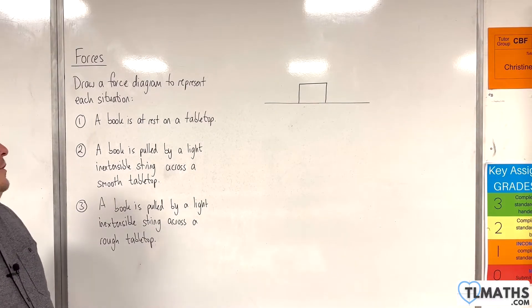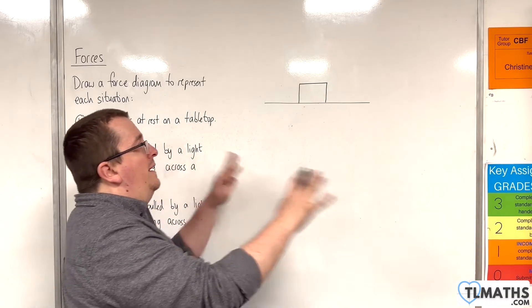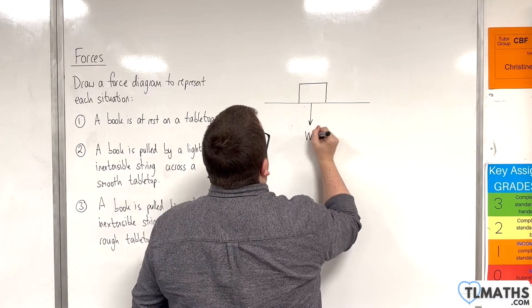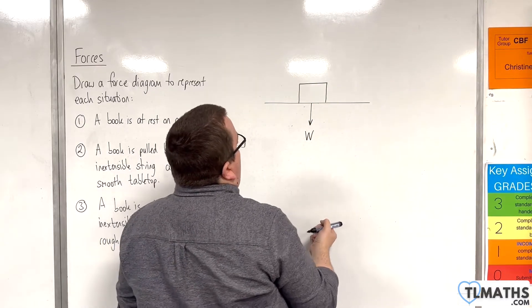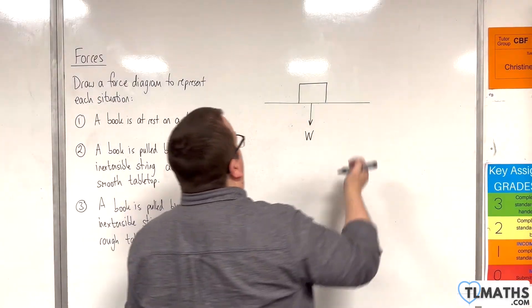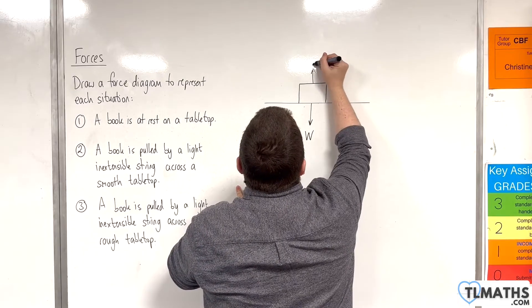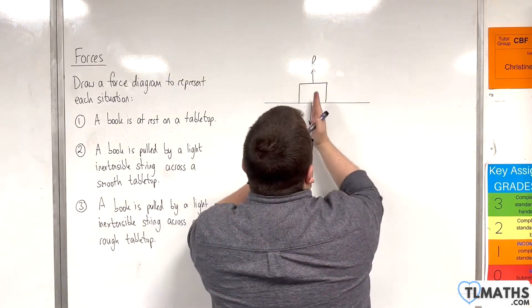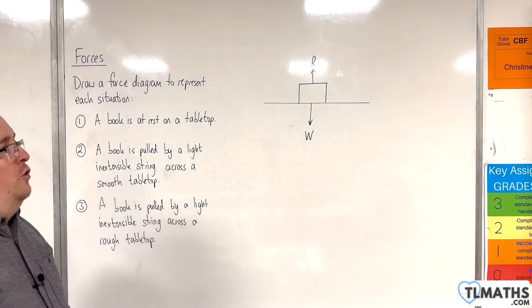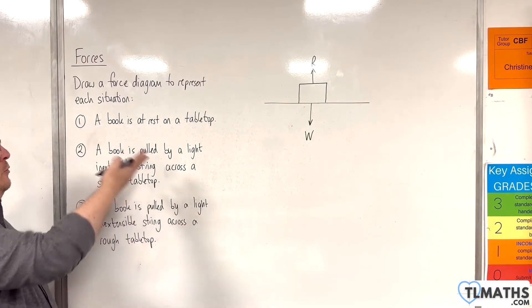Now, because the book is at rest on a tabletop, it is not moving left or right, we'll have the weight acting vertically downwards. And to stop it sinking through the table there must be a normal reaction force. The book is in contact with the surface so there will be a normal reaction force that acts perpendicular to the surface. And so we label that R, the normal reaction force. So that is my diagram for number one.